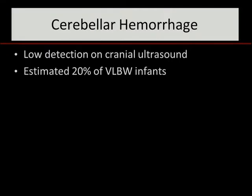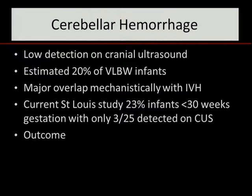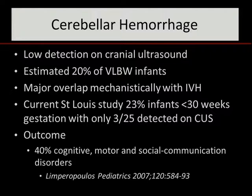Instead we'll look at cerebellar hemorrhage. Cerebellar hemorrhage has a low detection rate on cranial ultrasound — pathology studies estimate as many as 20% of babies may have this lesion. There is major mechanistic overlap with IVH. In our current study, 23% of infants less than 30 weeks had this lesion, and on only three could we see it on cranial ultrasound, confirming how difficult it is to detect even with posterior views. The outcome has been suggested to be important, with Kathy Limperopoulos showing this lesion can be associated with a severe burden of cognitive, motor, and semi-autistic type features.